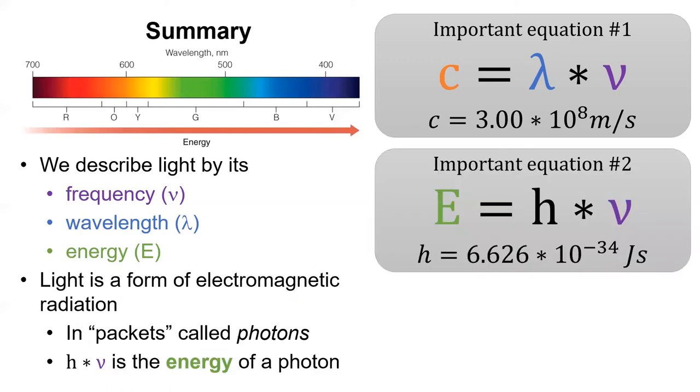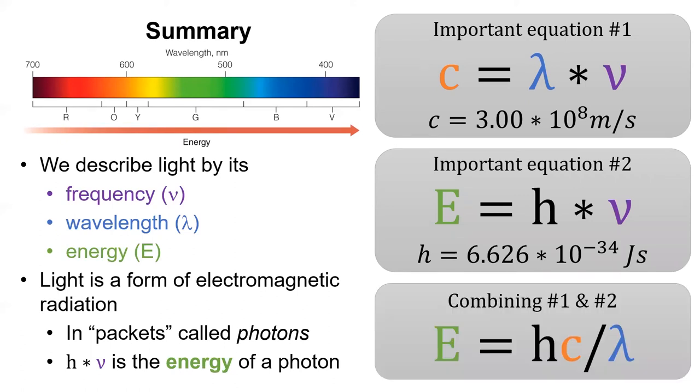Light exists in little packets of discrete energy called photons. We calculate the energy of an individual photon using equation number two. While you only need to know equations one and two for this class, this last equation is a shortcut to calculate the energy of a photon from its wavelength. However, you could also get there by just using equation one and then equation two.